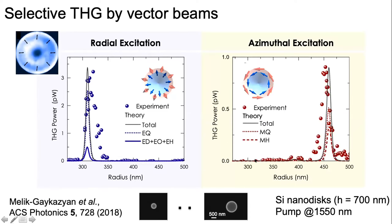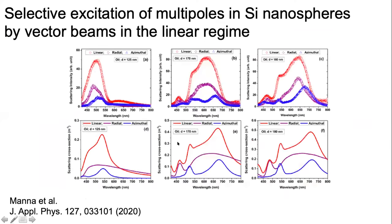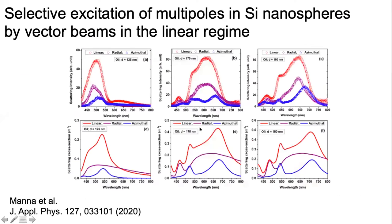In contrast, when we switched to azimuthal polarization, discs that had been resonant could no longer generate any non-linear response. Conversely, discs which support magnetic multipolar modes became efficient for non-linear optical processes. We called this selective third-harmonic generation.